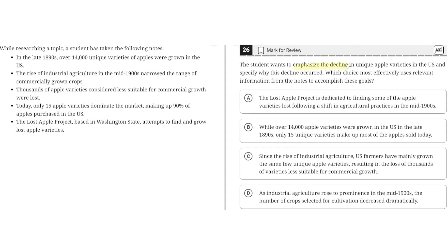The student wants to emphasize the decline in unique apple varieties in the U.S. and specify why this decline has occurred. Which choice most effectively uses relevant information from the notes to accomplish these goals?